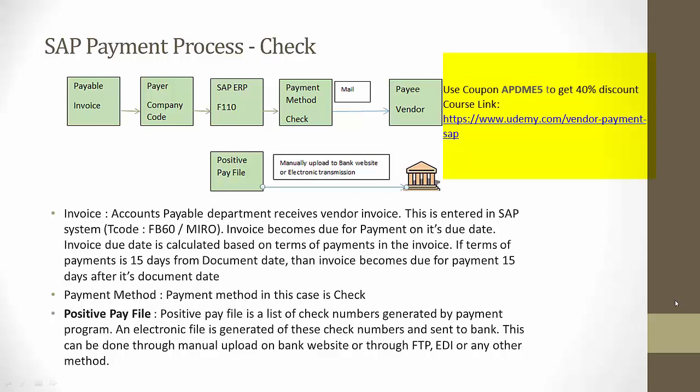The next step in the case of cheque payment is to generate a positive pay file. A positive pay file is an electronic file containing a list of checks along with the vendor names. This file is then sent to the bank, either by manually uploading it on the bank website or through a secured file transfer protocol. The bank uses the data in the file to validate the check when it is presented to them.